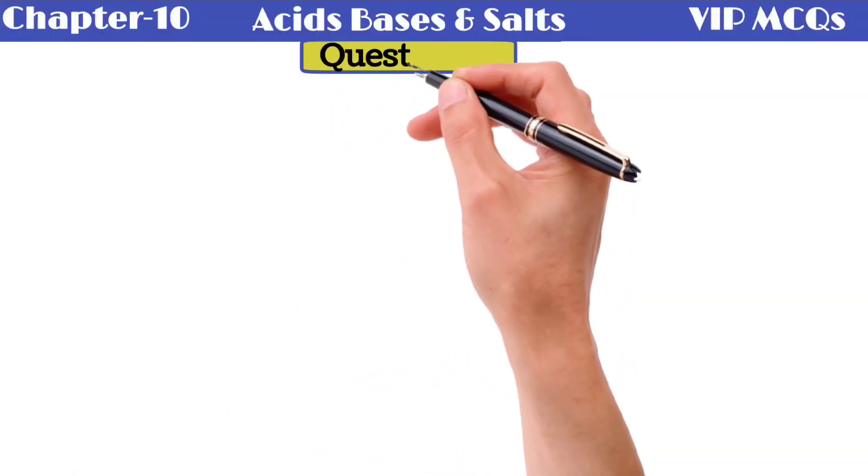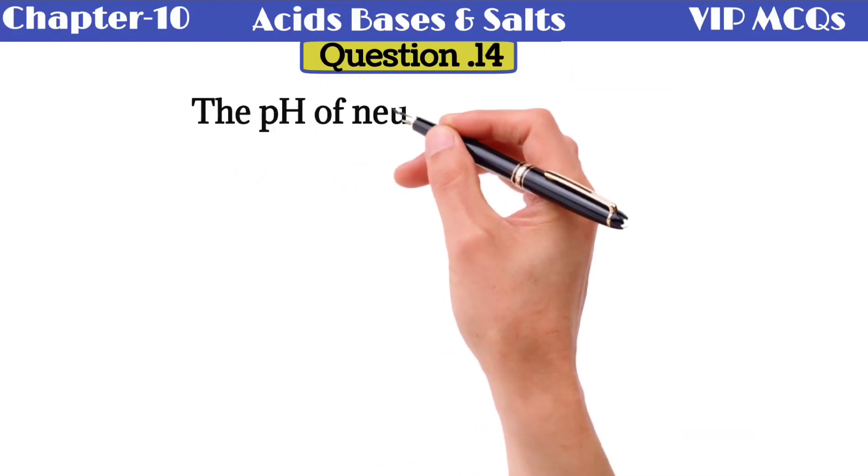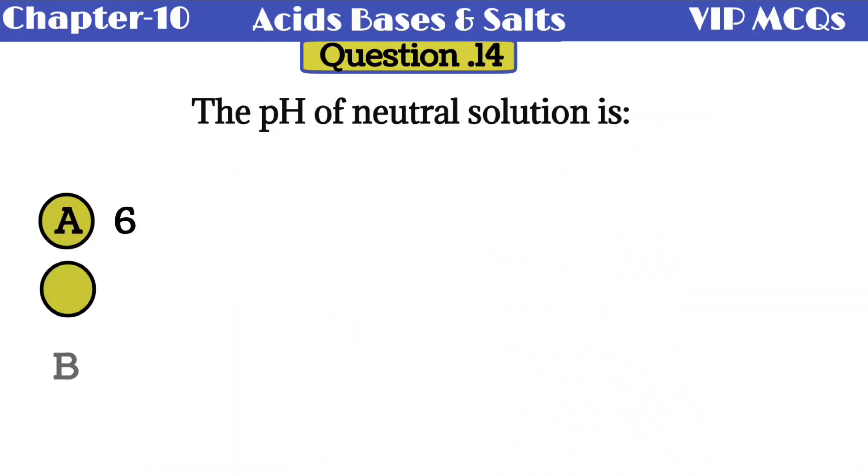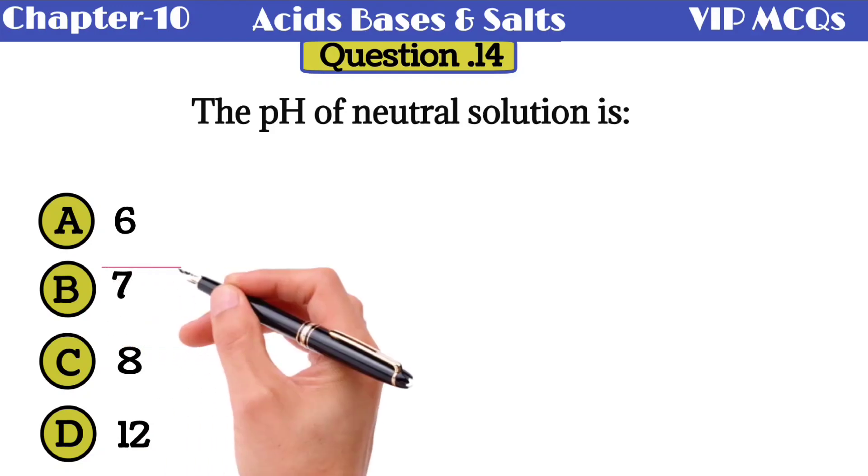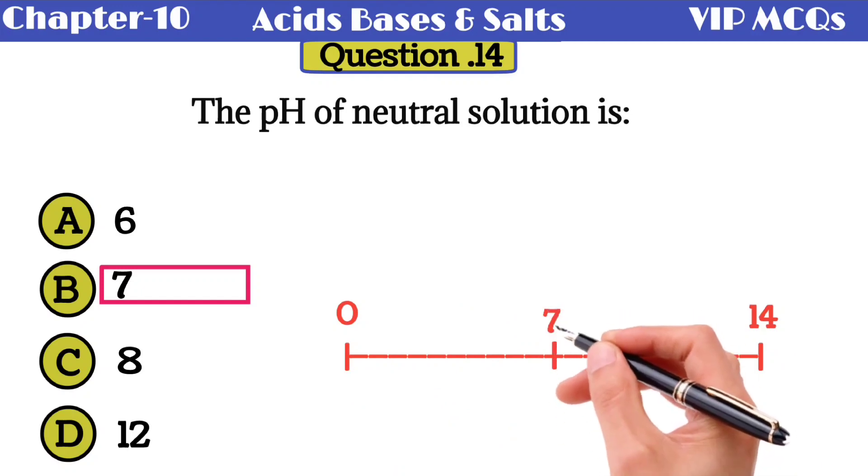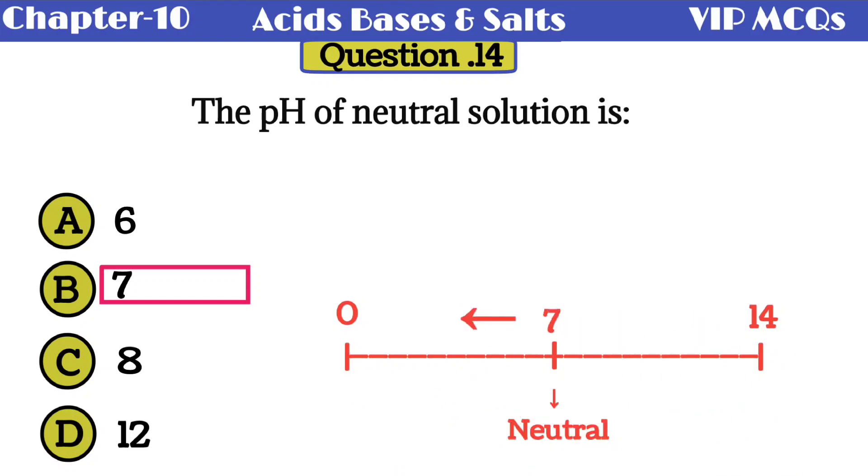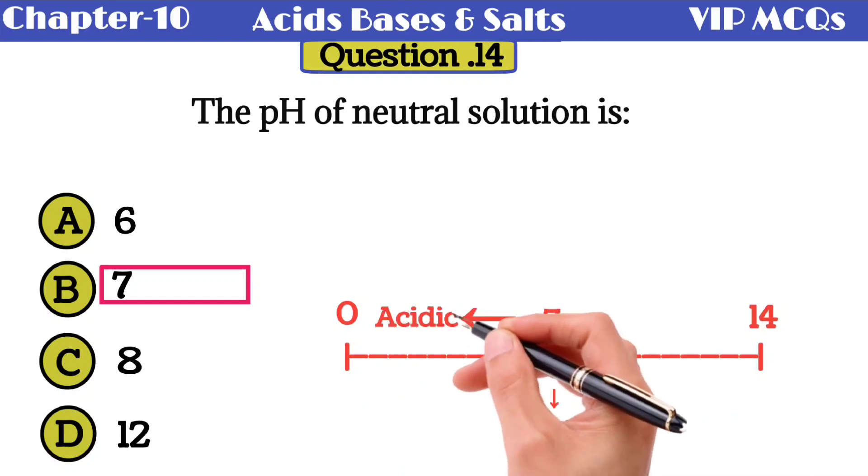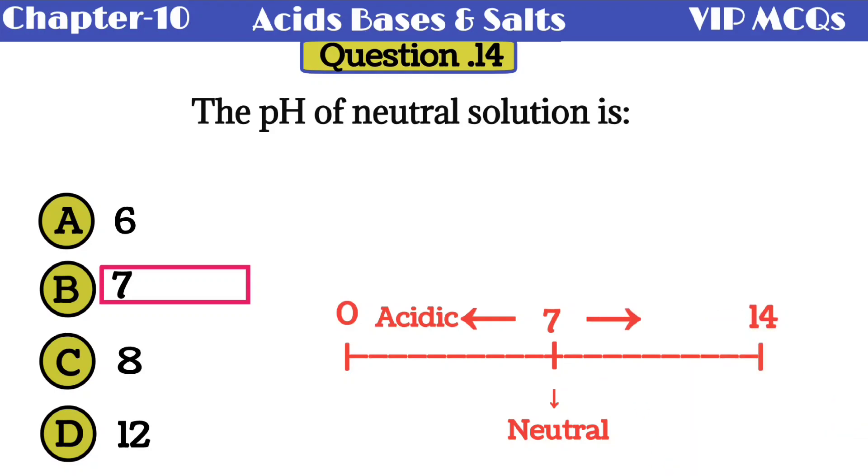Question number 14: the pH of a neutral solution is 6, 7, 8, or 12? The pH of neutral solution is 7. pH scale starts from 0 to 14. The solution of 7 pH is neutral. If the value is less than 7 then the solution is acidic. And if the value of pH is greater than 7, then the solution is basic.